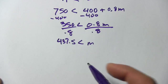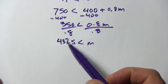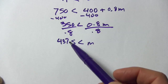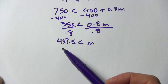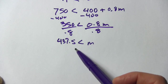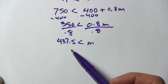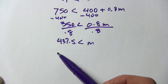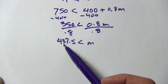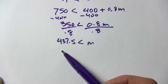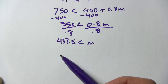So what that means is if you drive more than 437.5 miles, A is the cheaper option. But if you're driving less than that, you should probably go with option B.